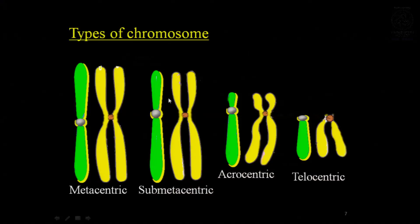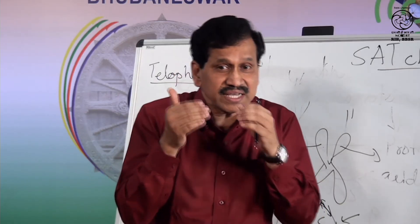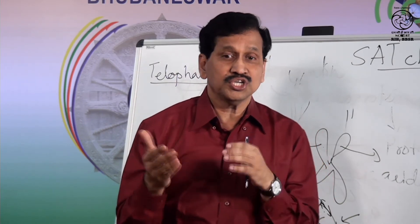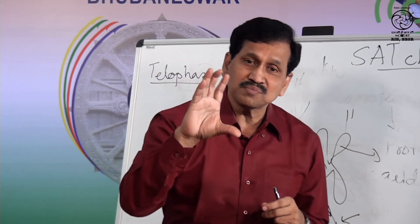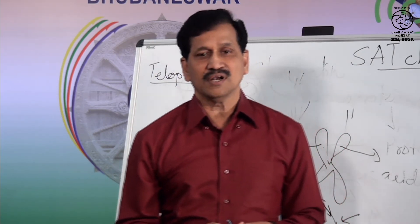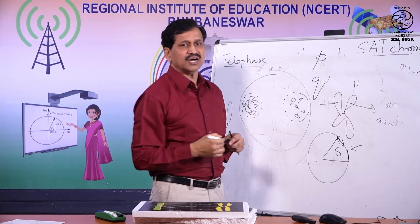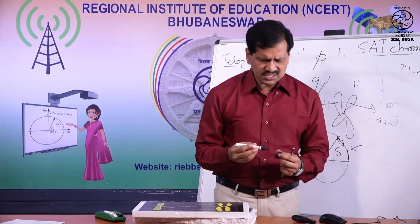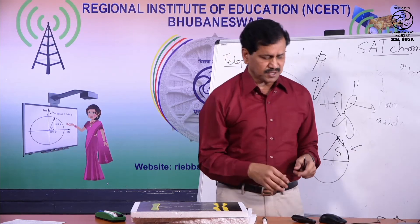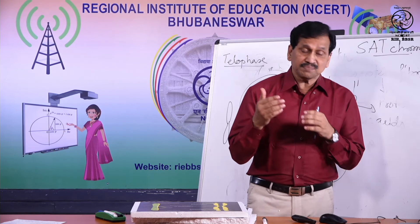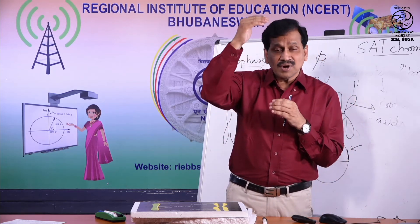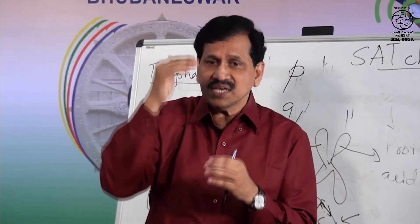In the metacentric chromosome, the centromere is located at the middle, so the two arms of the chromosome are equal in size. In the sub-metacentric chromosome, the centromere is not exactly at the middle — it is away from the middle — so one arm is shorter and one is longer. The shorter arm is known as the P arm (petite, meaning small) and the long arm is called the Q arm.